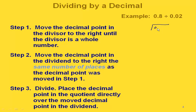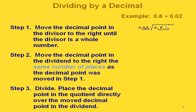Underneath our division box we have our eight tenths and out here we have our two hundredths. This is the one we need to change so that it's a whole number. To do that we're going to move our decimal point over two places, which means we have to do the same thing to the dividend — move it over once, twice. It's very important that you write in the decimal point in its new location, and we have to actually add a zero here.